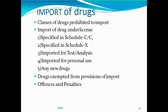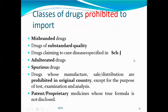There are also certain categories of drugs exempted from provisions of import — if certain drugs are banned in a particular country, such drugs cannot be imported into India as they are banned or prohibited in their country of origin. Next are offenses and penalties for any contravention of the Drugs and Cosmetics Act. To recap, the classes of drugs prohibited to import include misbranded drugs, substandard quality drugs, drugs claimed to cure Schedule J diseases, adulterated and spurious drugs, and patent or proprietary medicines whose true formula is not disclosed.